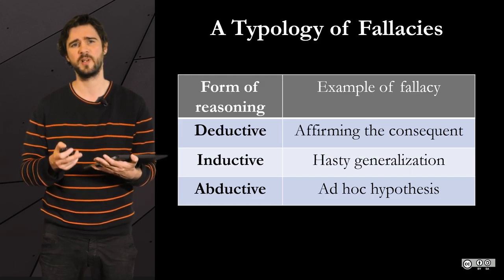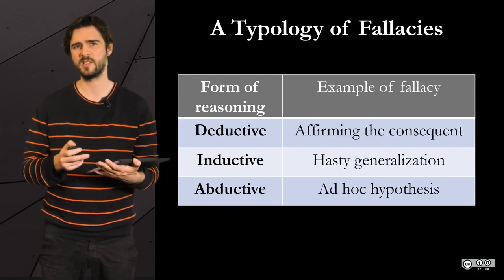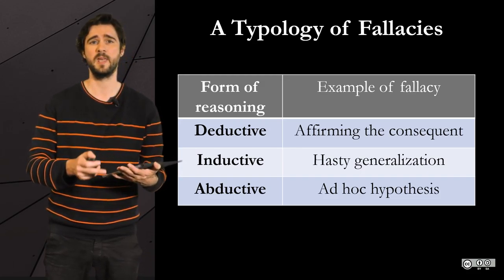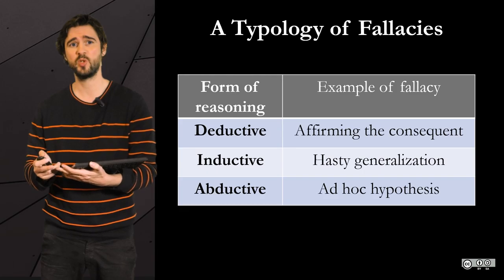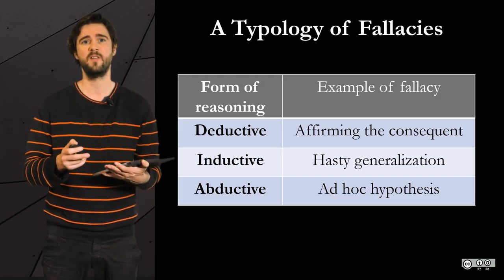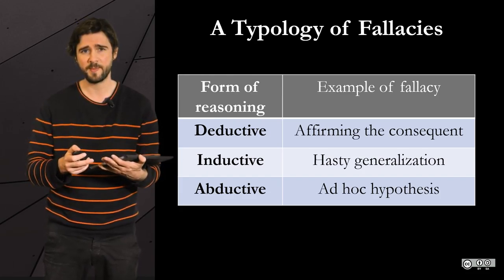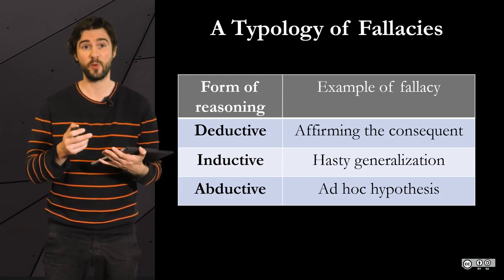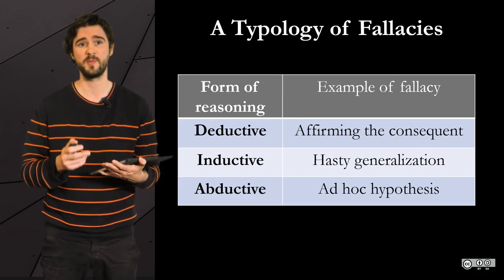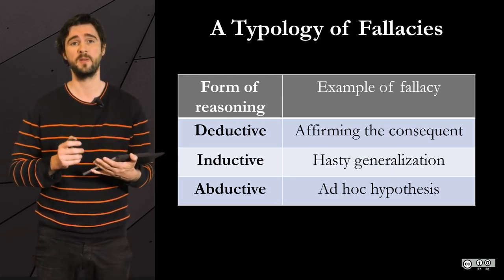For each one of these inferences, you can find a specific type of fallacy. For instance, affirming the consequence is a formal fallacy associated with deductive reasoning. Hasty generalization is an issue of inductive reasoning. And finally, ad-hoc hypotheses — or in other words, far-fetched hypotheses — are a problem of abductive reasoning. These concepts may seem a bit complicated, but they are of great help when you try to categorize fallacies. Having a good typology in mind sure helps you navigate the sea of fallacious reasoning that extends way beyond the horizon.